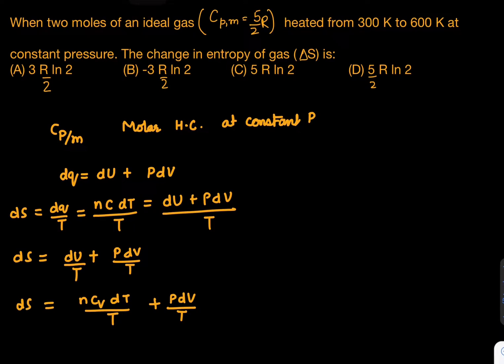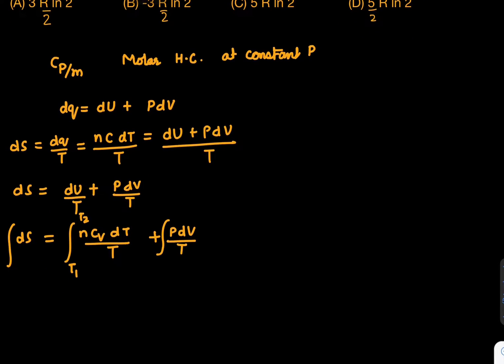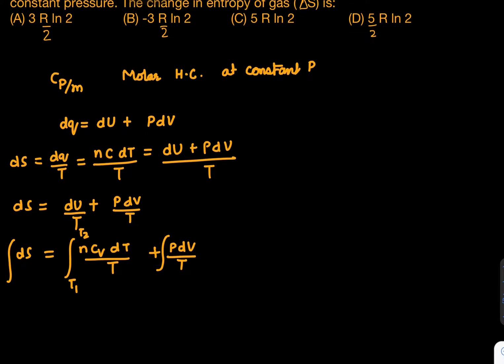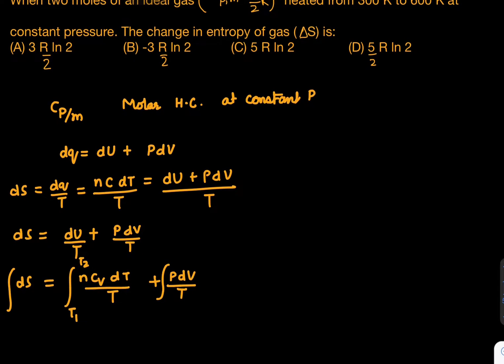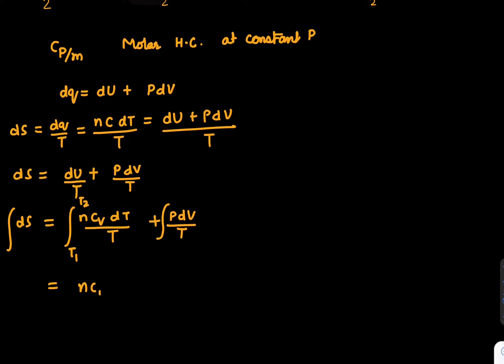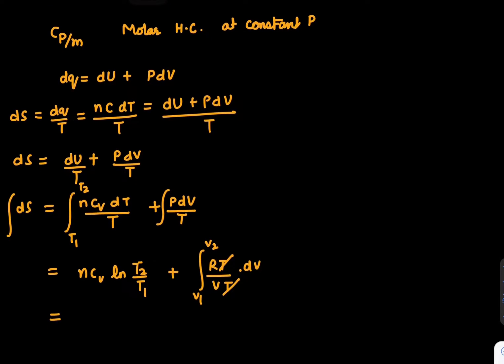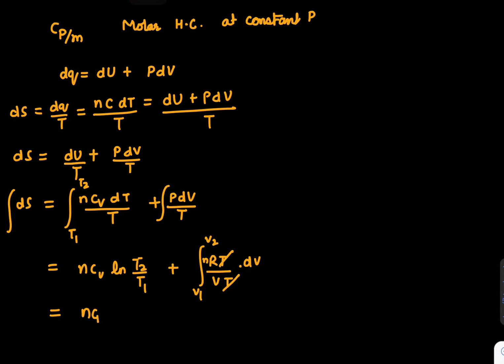The integration will be from T1 to T2 for temperature. For the second part with P, we're talking about a general case, the ideal gas scenario. What we can write is nCv ln(T2/T1) plus the integral from V1 to V2 of (RT/V) dV. This becomes nCv ln(T2/T1) + nR ln(V2/V1), which equals ΔS.